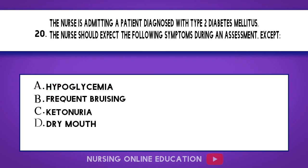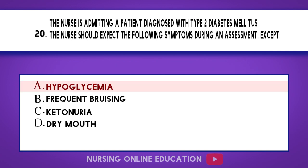Question 20. The nurse is admitting a patient diagnosed with type 2 diabetes mellitus. The nurse should expect the following symptoms during an assessment, except: A. Hypoglycemia. B. Frequent bruising. C. Ketonuria. D. Dry mouth. The answer is option A: Hypoglycemia.